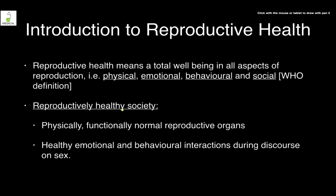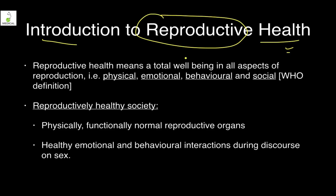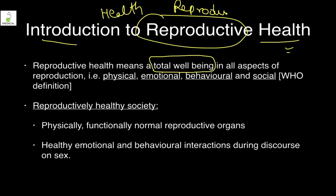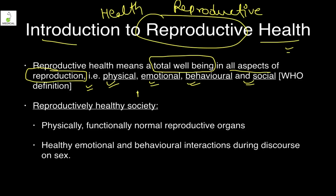Now, what do you mean by reproductive health? Reproductive health means total well-being — this is the WHO definition of health with the word 'reproduction' added. Health includes physical, emotional, behavioral, and social aspects. The full definition is: total well-being in all aspects of reproduction — physical, emotional, behavioral, and social.